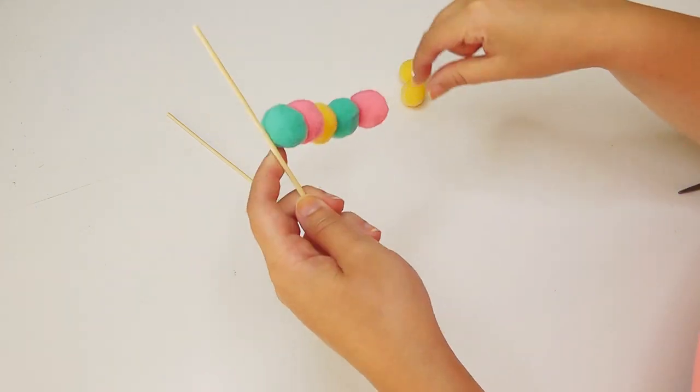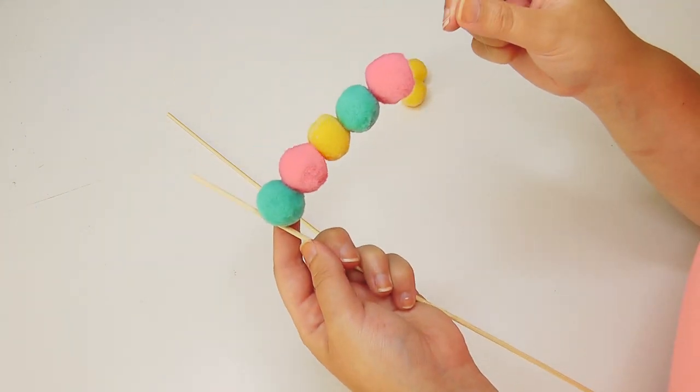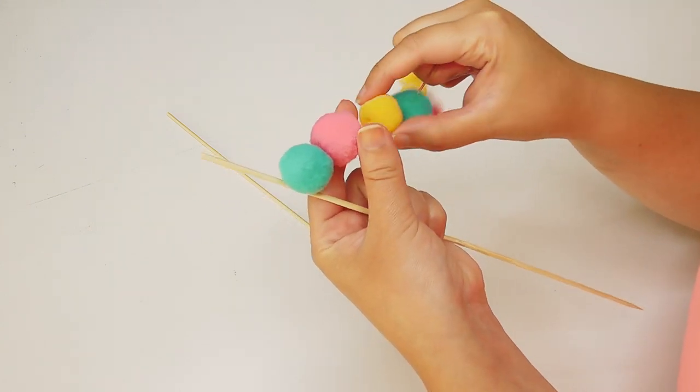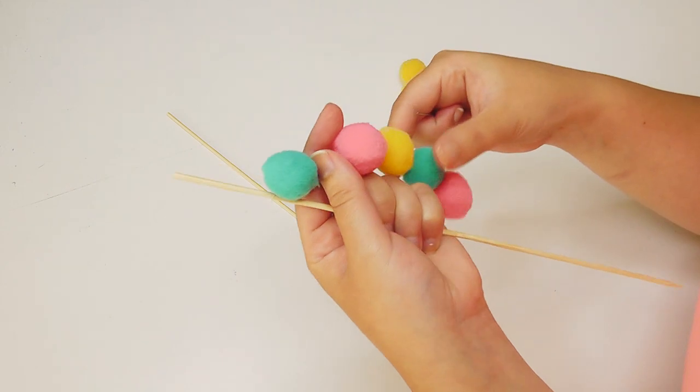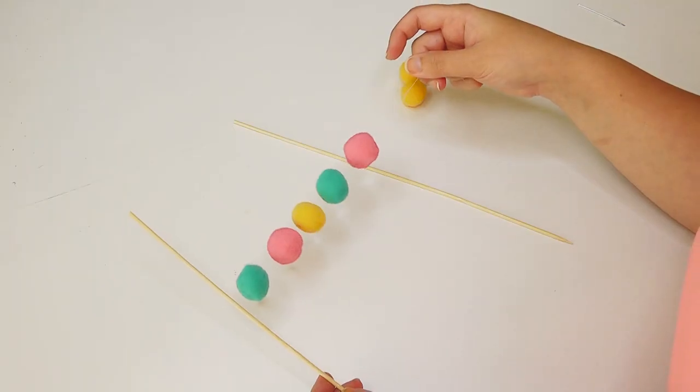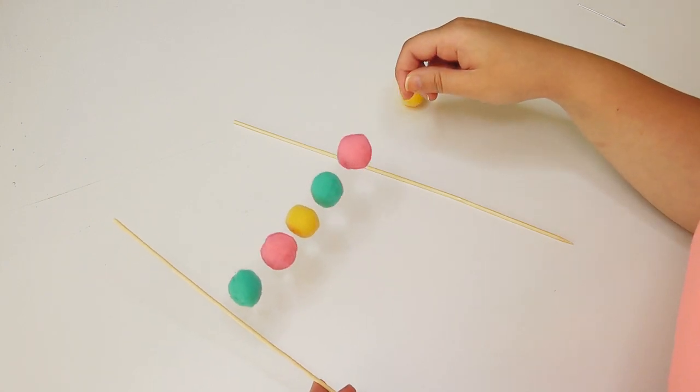You can choose to have your pom poms all close together or space them out a little bit. This will determine how long your fishing line needs to be. Take off the needle and tie the remaining fishing line to your other stick.